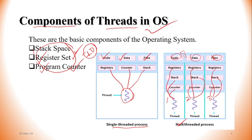We can see process P1 with code, data, and file. This P1 processor has three threads. The threads share the code, data, and files of the process. So thank you.